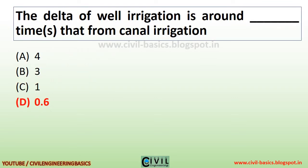The delta of well irrigation is around 0.6 times that from canal irrigation.